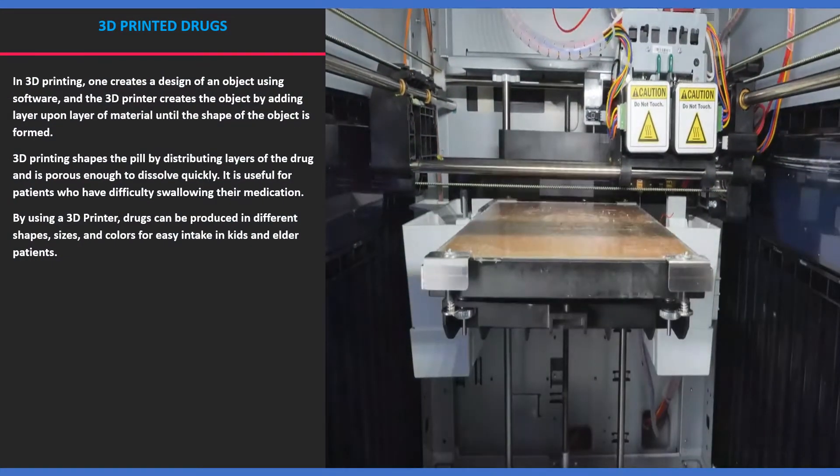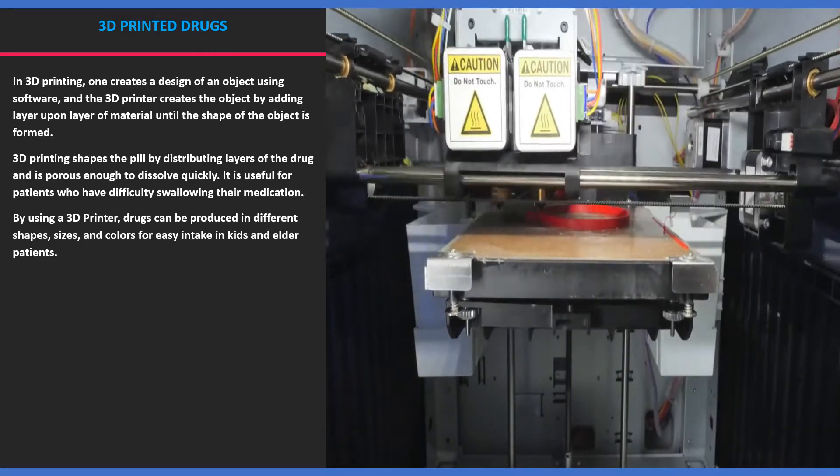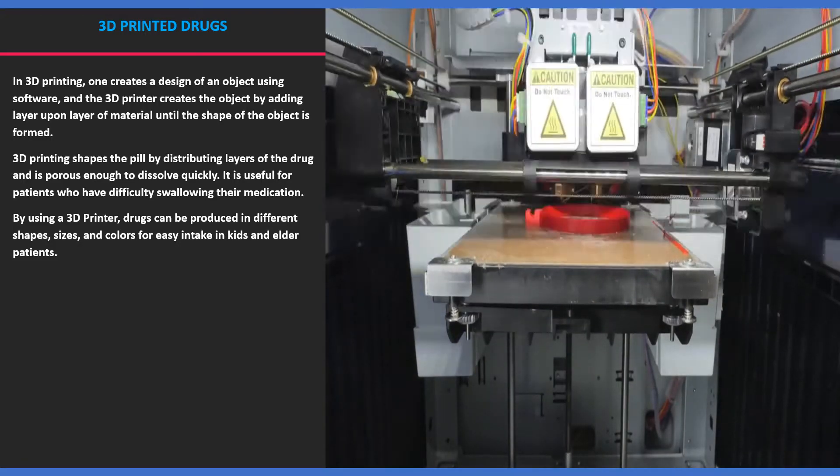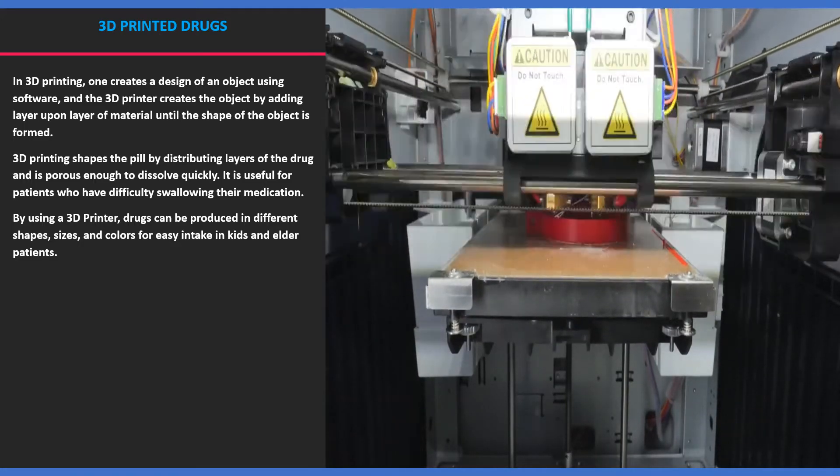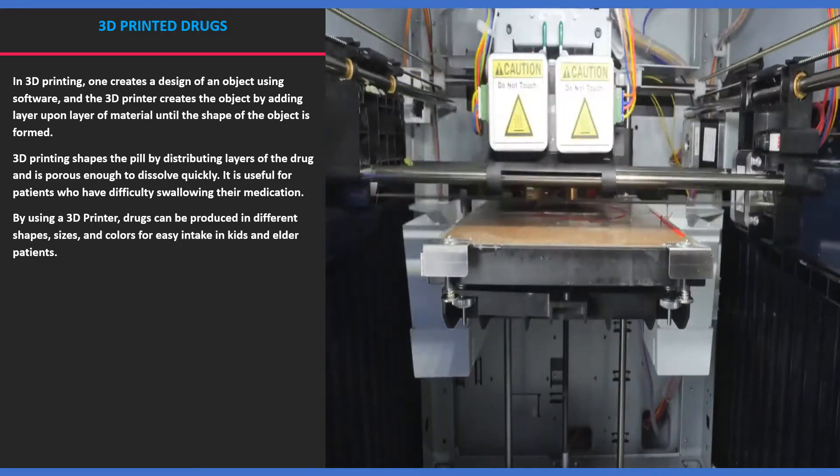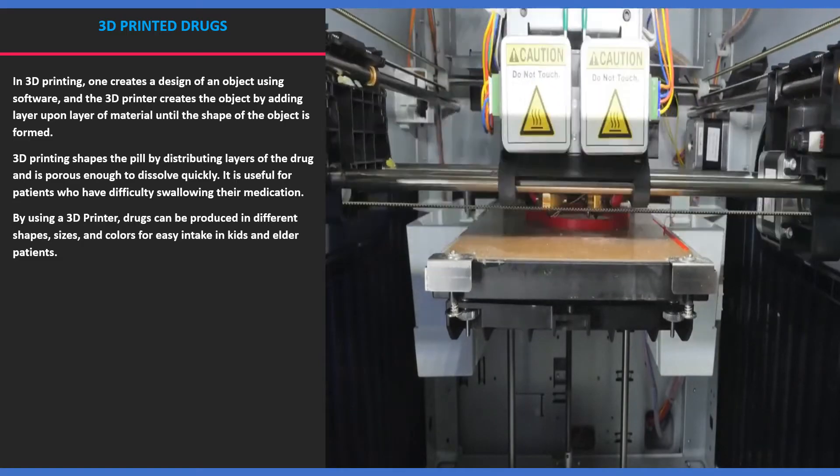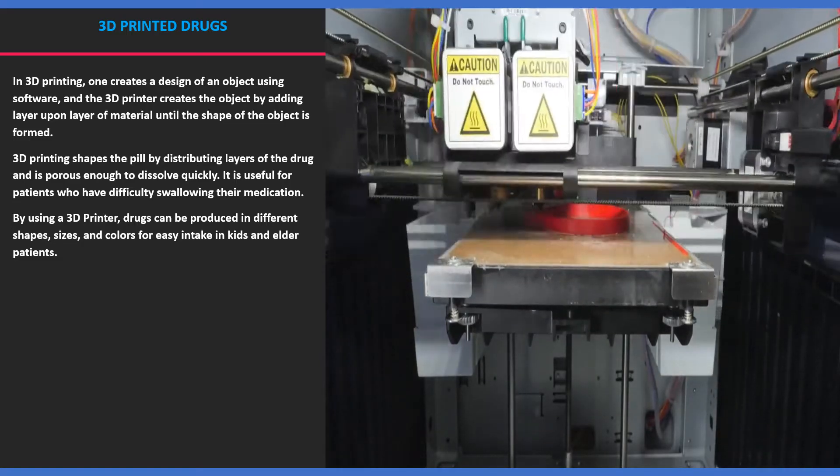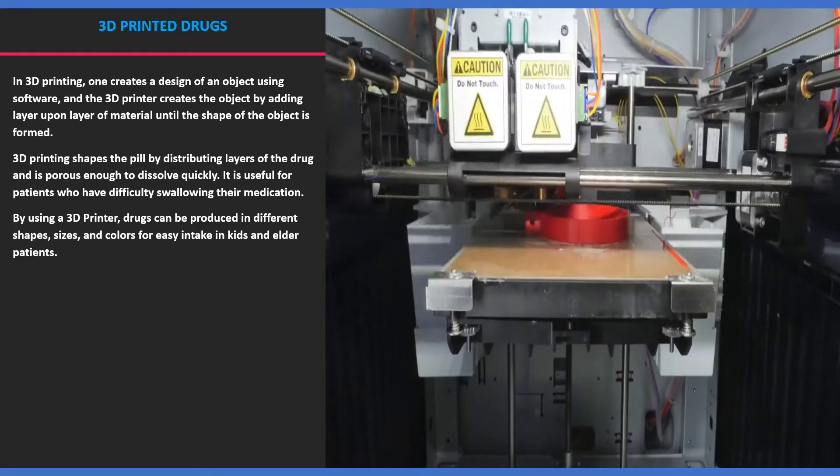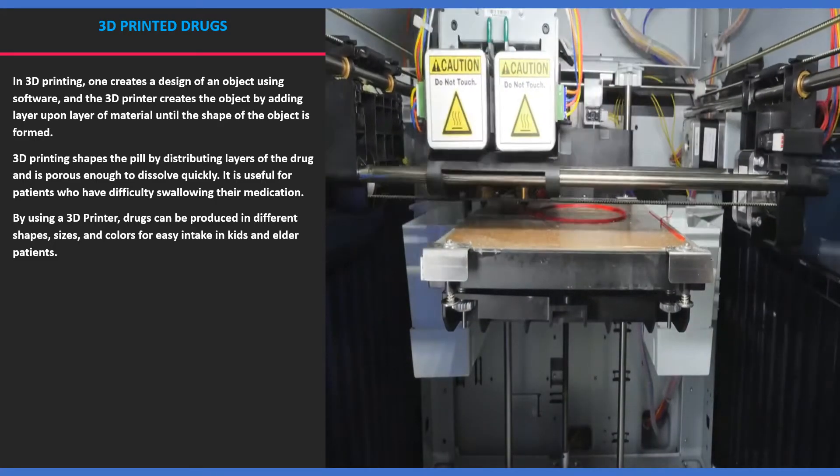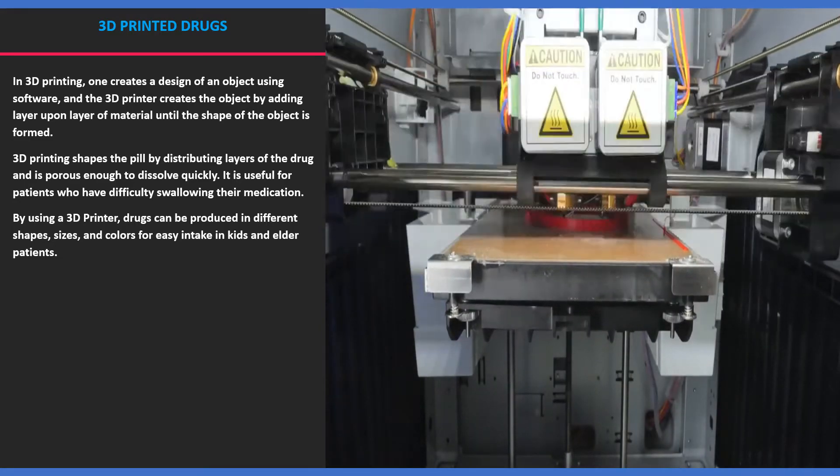The next tech is the 3D printing technology. In 3D printing, one creates a design of an object using software, and the 3D printer creates the object by adding layer upon layer of material until the shape of the object is formed. 3D printing shapes the pill by distributing layers of the drug and is porous enough to dissolve quickly. It is useful for patients who have difficulty swallowing their medication. By using a 3D printer, drugs can be produced in different shapes, sizes, and colors for easy intake in kids and older patients.